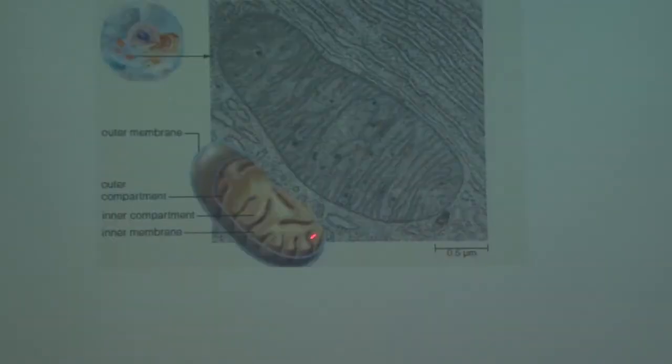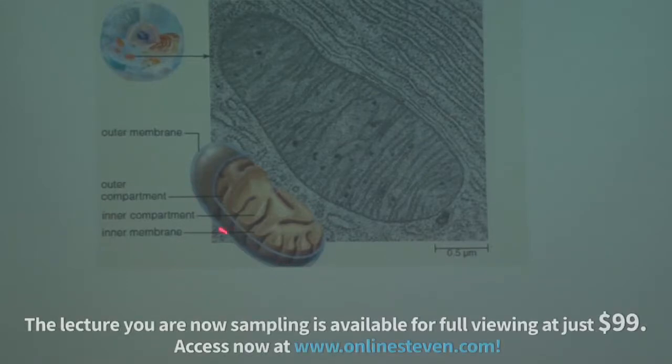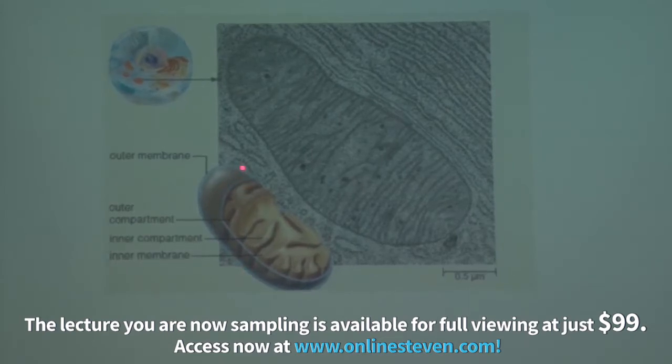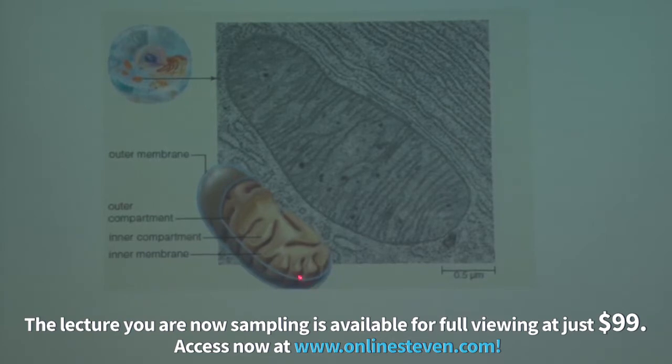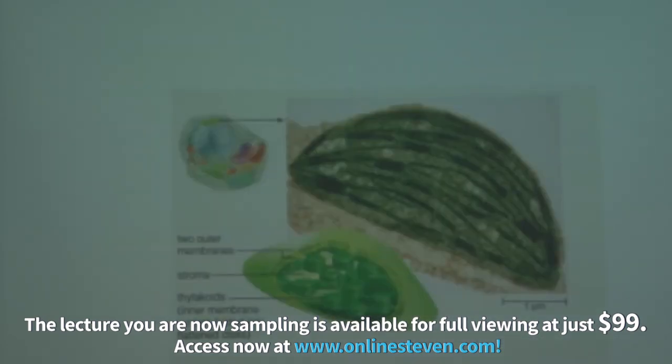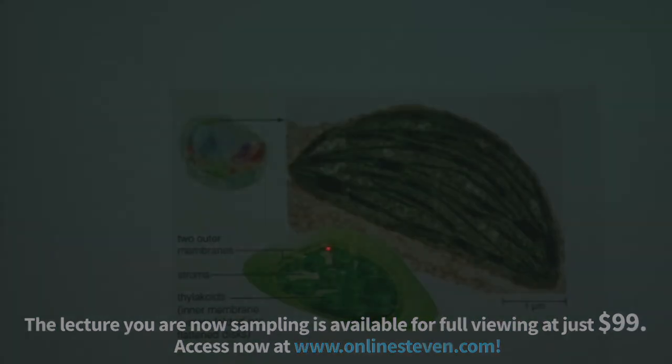When you look at the detailed structure of mitochondria, it looks like this. The membrane has two layers: an outer membrane, the sky blue one, and an inner membrane, which is the brown one. The outer membrane is a double membrane structure - actually two layers. When you look at the chloroplast...